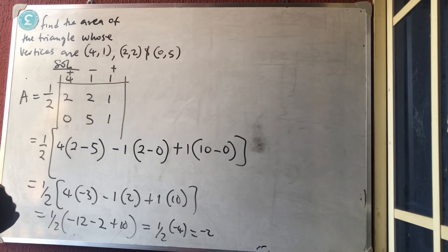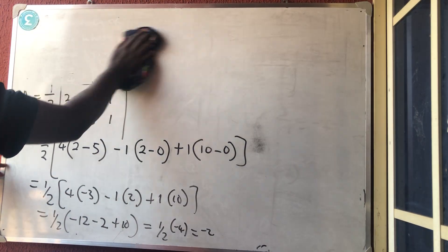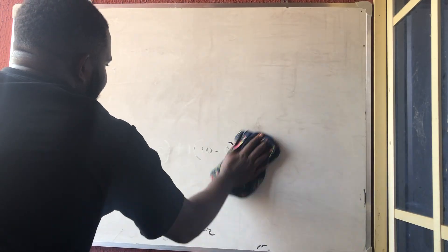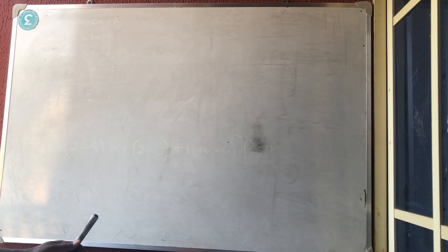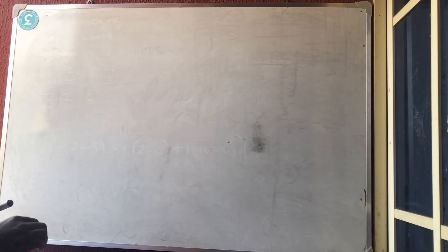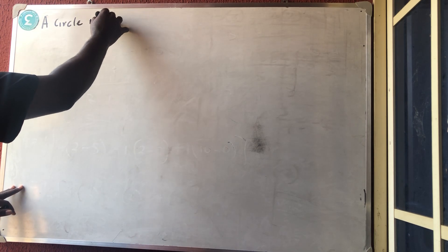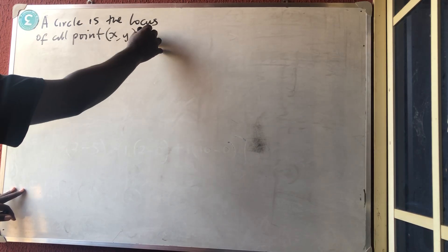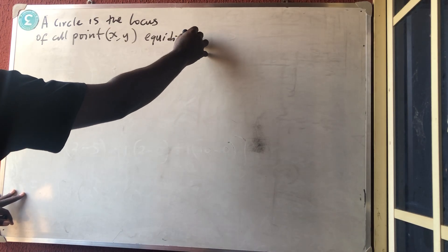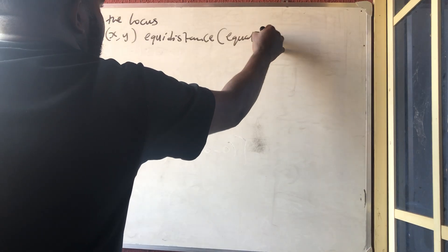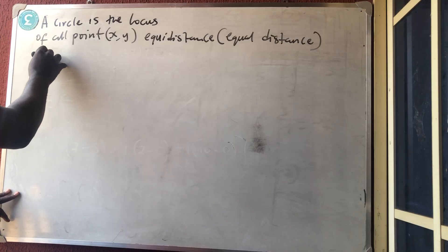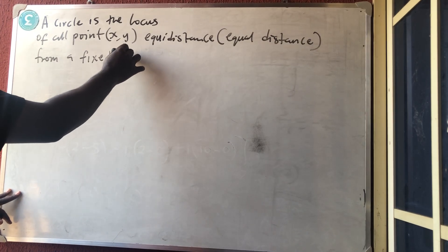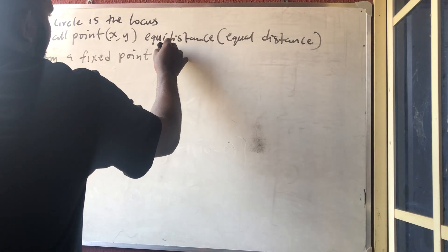That's the triangle area. Now let's talk about circle. A circle is not simply something that is round — a sphere is round too. A circle is defined as the locus of all points (x, y) equidistant from a fixed point, and that fixed point is the center of the circle, which we call h and k.